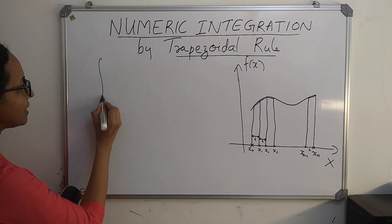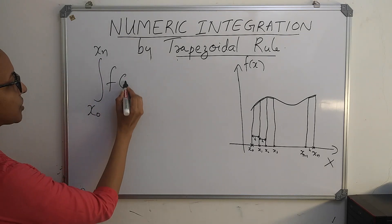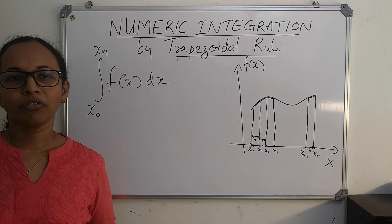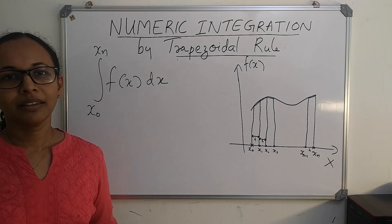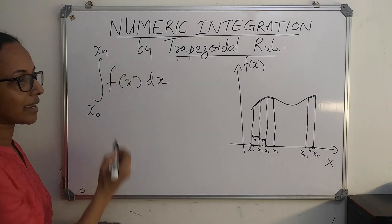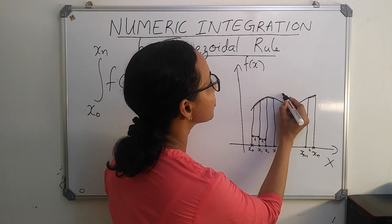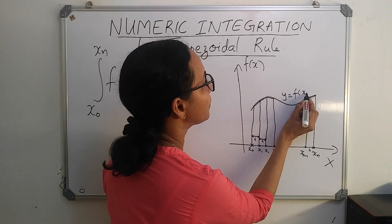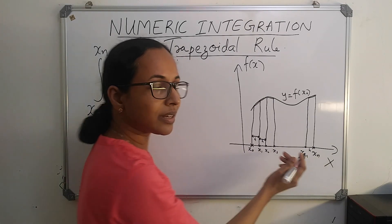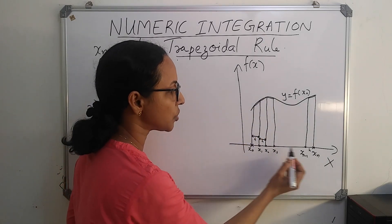Suppose we have to evaluate an integral of f(x) from x₀ to xₙ. You know the geometrical meaning of this integral — that is, the area under the curve y = f(x) from x₀ to xₙ. I have plotted it here. This is the function y = f(x), and we have to integrate it from x₀ to xₙ. The value of this definite integral is the same as the area under this curve from x₀ to xₙ.